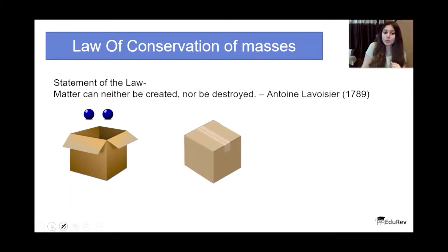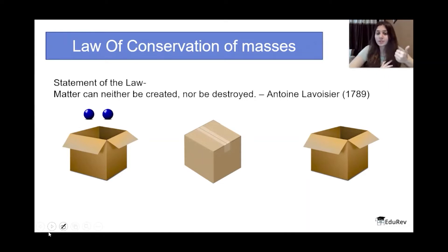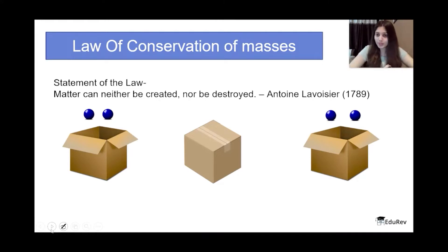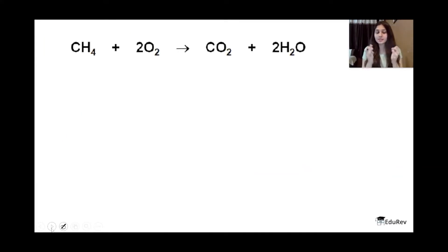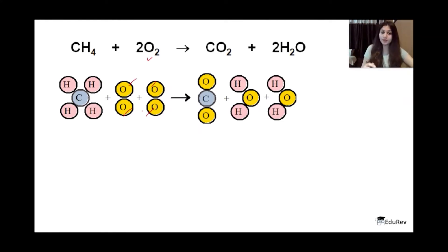When you open the box, how many balls would you expect? You wouldn't expect one ball or five balls — because you added two balls, you would expect two balls to come out. This is exactly the Law of Conservation of Mass: whatever mass you put in, you expect the same mass to come out. In a reaction, on the left-hand side you see four oxygen atoms (1, 2, 3, 4) and after the reaction you would expect four oxygen atoms on the right-hand side as well.